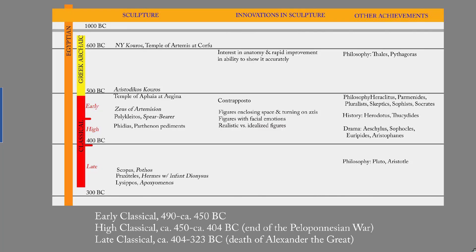These are the dates and the breakdown of the Classical Period. Early Classical runs about 490 to 450. High Classical is about 450 to 404, when the Peloponnesian War ended. And Late Classical is about 404 to 323, when Alexander the Great died. If you want, you can pause and read the other achievements as well.